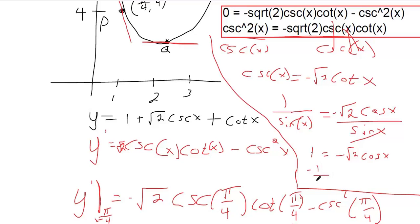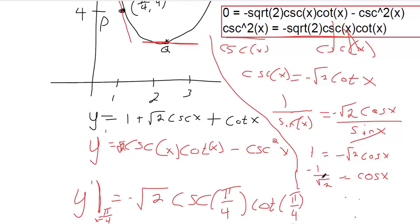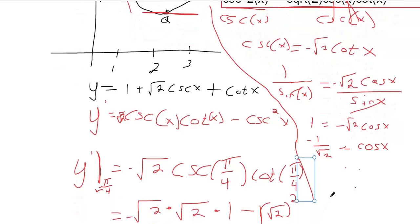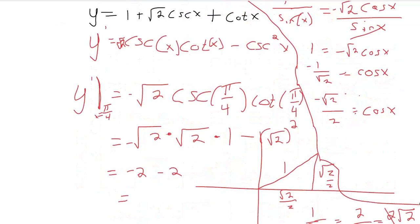That doesn't have the denominator rationalized, and that's one reason we always emphasize rationalizing the denominator — we might not recognize what that is. But it is one of our special triangles. If you rationalize by multiplying top and bottom by square root of two, you get negative square root of two over two equals cosine x. So x is an angle — what angle makes the cosine ratio equal negative square root of two over two? There are two places where that happens.